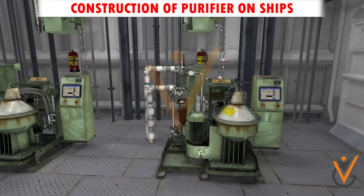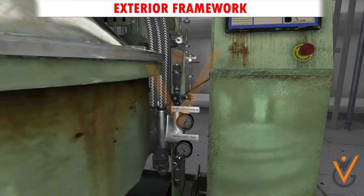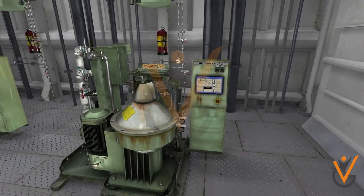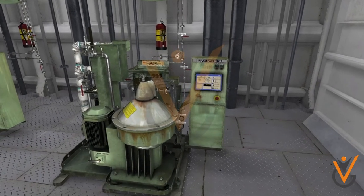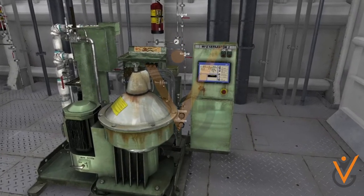Construction of purifier on ships. Exterior framework: The exterior framework is normally made up of cast iron which supports the internal bowl and disc parts and carries water line, feed line, and outlet line connections.